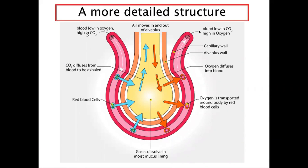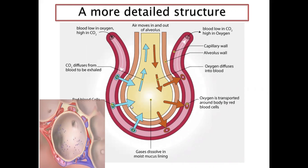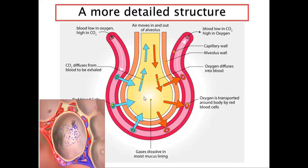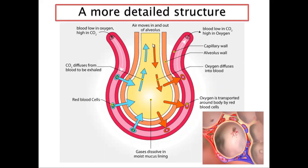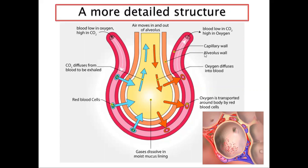Blood with high carbon dioxide concentration and low oxygen concentration arrives. The carbon dioxide diffuses into the space of the alveolus, and the red blood cells release carbon dioxide into that space. The incoming air has a large amount of oxygen — high concentration — so oxygen diffuses into the red blood cells, and this exchange continues.